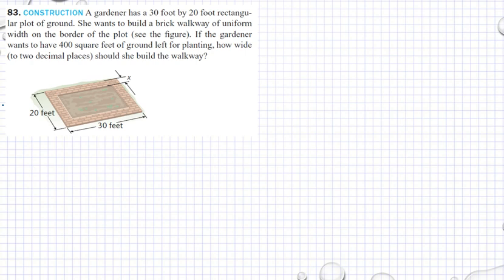The figure shows if the gardener wants to have 400 square feet of ground left for planting, how wide to two decimal places should she build the walkway? So if this is x and this is also x, then this inside here is 20 minus 2x. And if this is x and this is x...